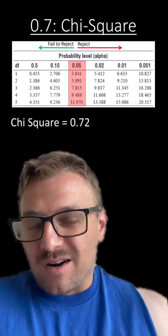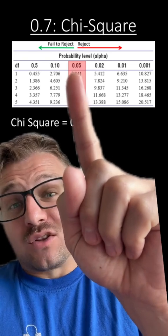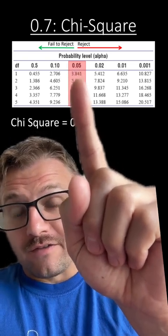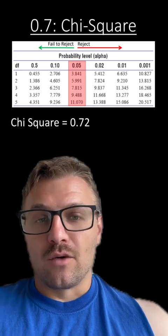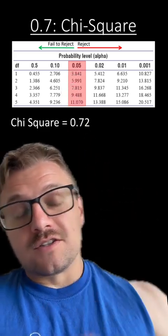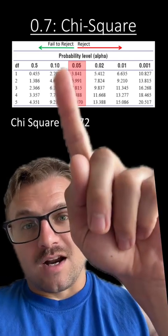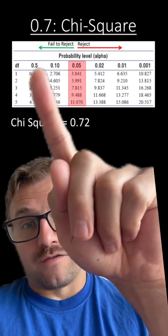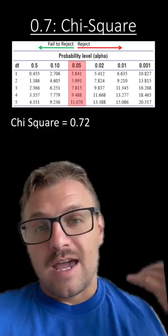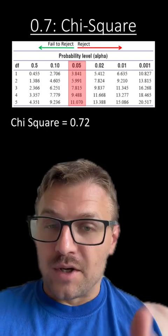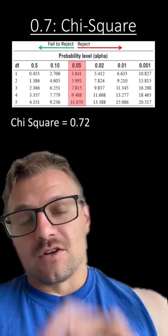Well, it actually really doesn't matter because all we know is that it is larger than 0.05. As long as the p-value for our experiment is larger than 0.05, we're going to fail to reject the null hypothesis. It really doesn't matter if it's 0.1, 0.5, or 0.75. As long as it's larger than 0.05, we fail to reject the null hypothesis.